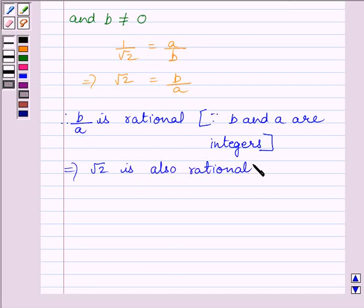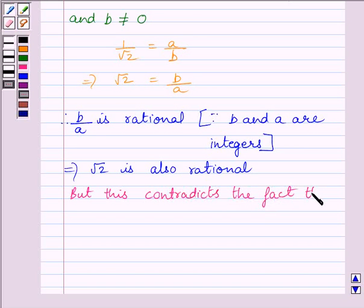But this contradicts the fact that root 2 is irrational. So, our assumption that 1 upon root 2 is rational is incorrect.